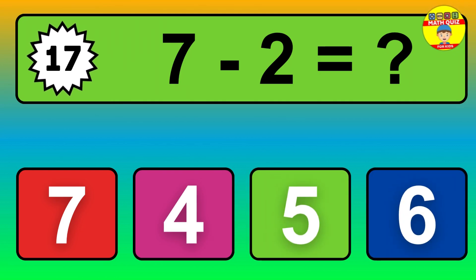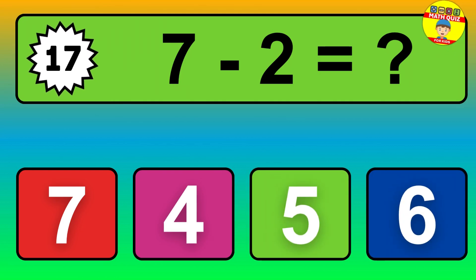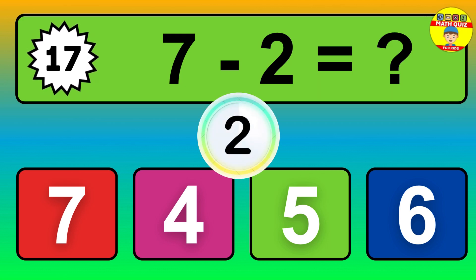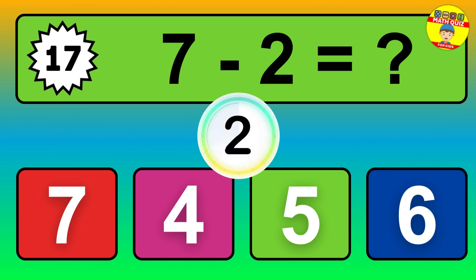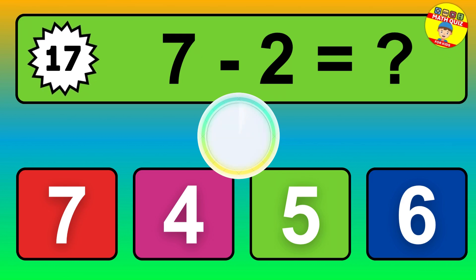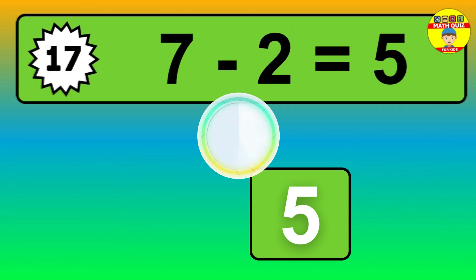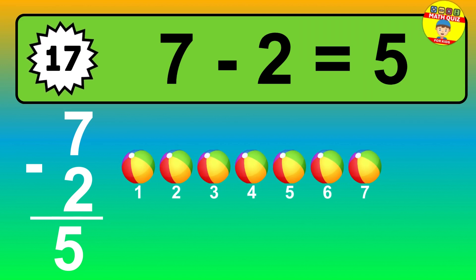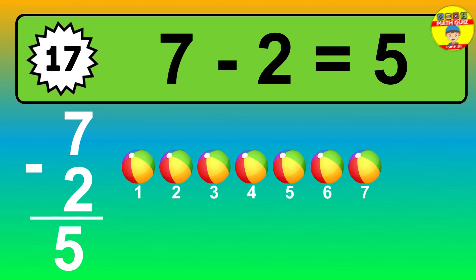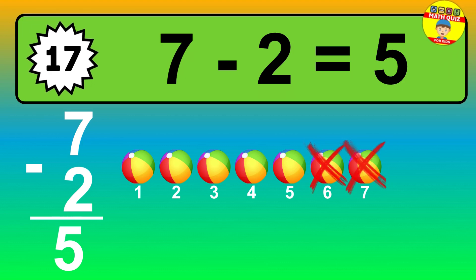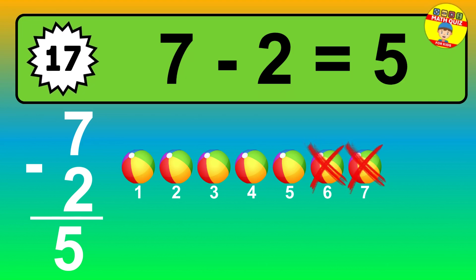Question 17. 7 minus 2 equals what? The answer is 7 minus 2 is 5. Let's count it. 1, 2, 3, 4, 5.